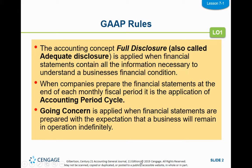A couple of GAAP rules we need to go over for this unit. Full disclosure basically says that you're going to put all the necessary financial information into the financial statements — everything you did. If you didn't use full disclosure, it would be like leaving out pages of a book. The accounting period cycle says that you're going to do financial statements at the same time — monthly in the book, quarterly or yearly in the real world. And going concern says that most people start a business with the thought that it's going to go on indefinitely until they either die or pass it on to somebody else.